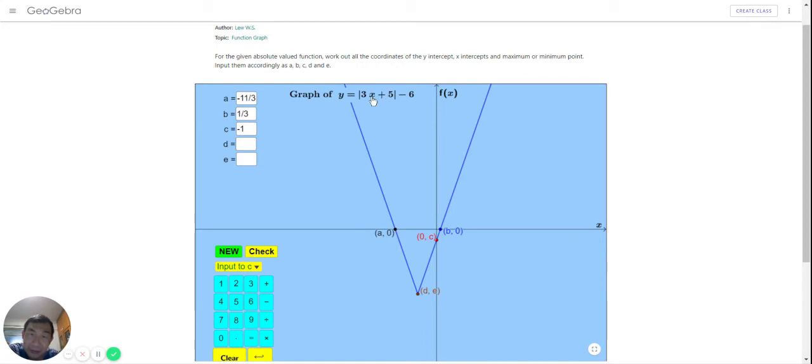To make this 0, x has to be negative 5 over 3. I think 3 times negative 5 over 3 becomes negative 5, negative 5 plus 5 becomes 0. And when this is 0, this will be at the lowest.